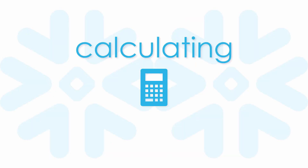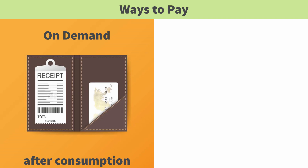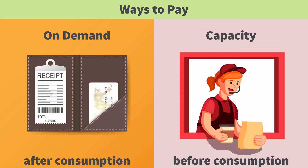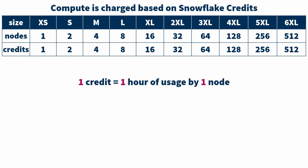Instead of talking about all Snowflake charges today, I'll focus on just the biggest line item: compute costs. There are two ways to pay for Snowflake services. The on-demand method is like asking a waiter for the check after you eat your meal, and the capacity option is like going out for fast food — it's cheaper, but you have to pay up front. I'll use on-demand pricing to make comparisons during this talk. A Snowflake credit is a unit of measure equivalent to one hour of usage by one virtual server node, and nodes and credits increase by powers of two.